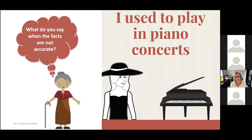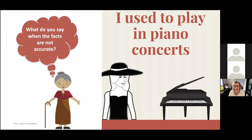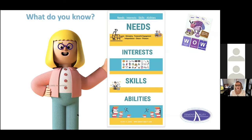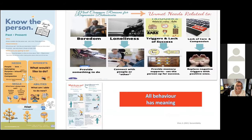A common question is: what if a person with dementia tells a family member something that isn't accurate? If it's a safety issue, yes, it matters. But if it's something like 'I used to play in piano concerts,' don't say 'no you didn't, mom' — instead ask a different kind of question, like 'did you enjoy playing the piano?' When creating the memory book, ask yourself: what would stimulate conversation, what facts should go in, what do they want in the book? Don't argue. All behavior has meaning, so we don't want to put any negative triggers in there. We need to set them up for success.